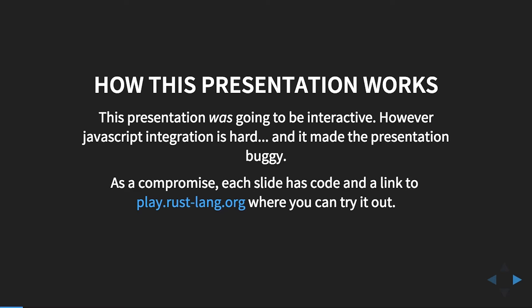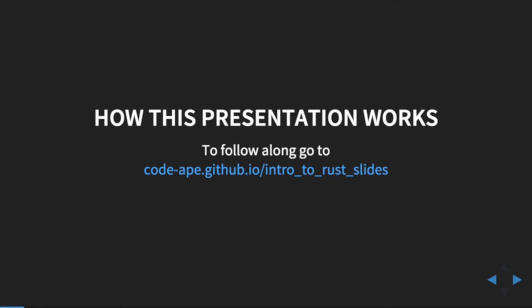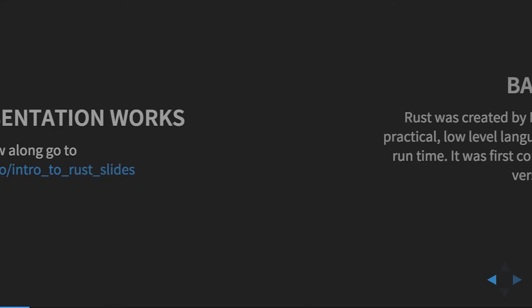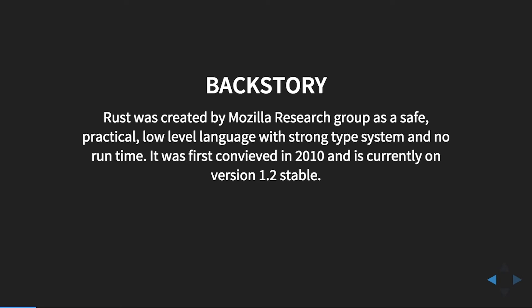Rust was created by Mozilla as a safe, practical, low-level language with a strong type system and no runtime. They advertise things like concurrency, which I find a little debatable since there is no runtime and you just have threads. It was started about five years ago in 2010 and just recently went stable within the last six months. We're currently on 1.2, and in my opinion I view it as a safe modern C++.